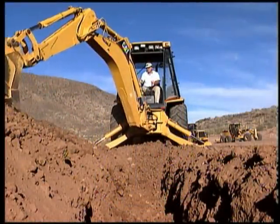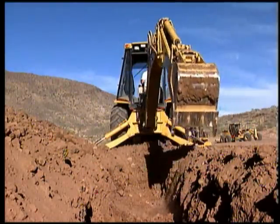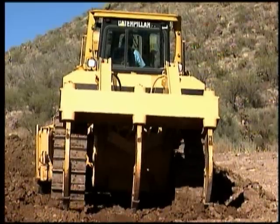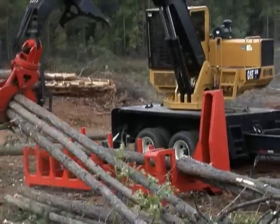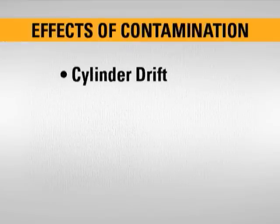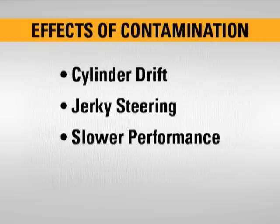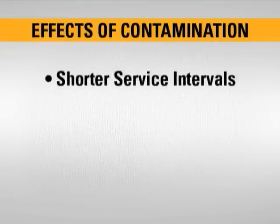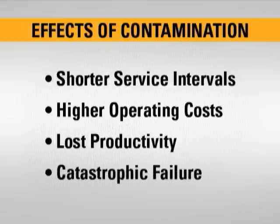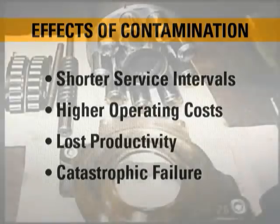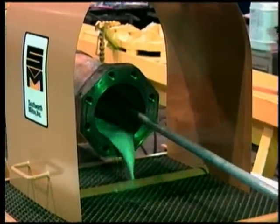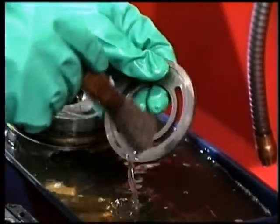Contamination can affect any machine with hydraulic capabilities. A hoe that swings too far on a backhoe loader or one track that unintentionally runs faster than the other on a track-type tractor can be a sign of contamination. Equipment owners and operators also see other common effects of hydraulic system contamination, including cylinder drift, jerky steering, slower performance, erratic operation, shorter service intervals, higher operating costs, lost productivity, and possibly catastrophic failure. The pump is one of the most expensive components to fix in a hydraulic system, and in the event of a catastrophic failure, it may take days or even weeks to repair a contaminated hydraulic system.